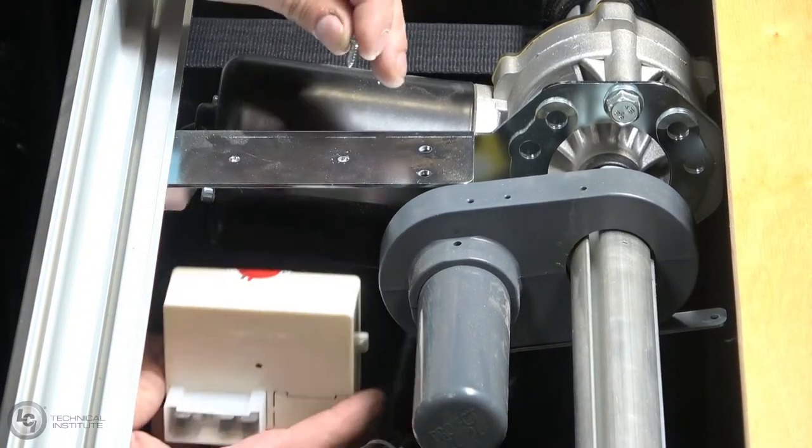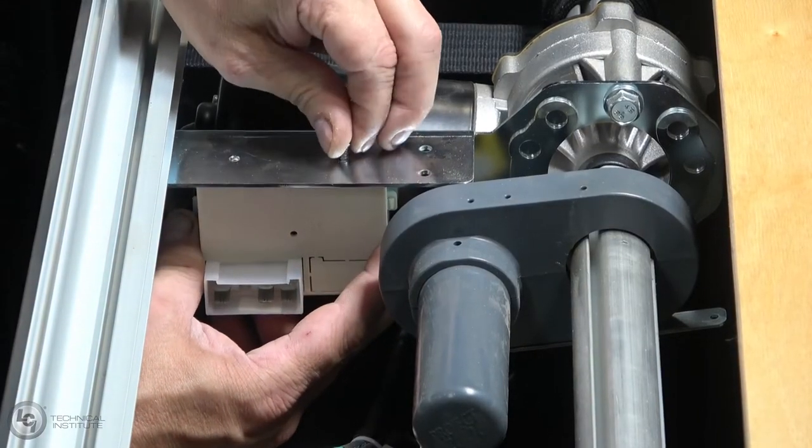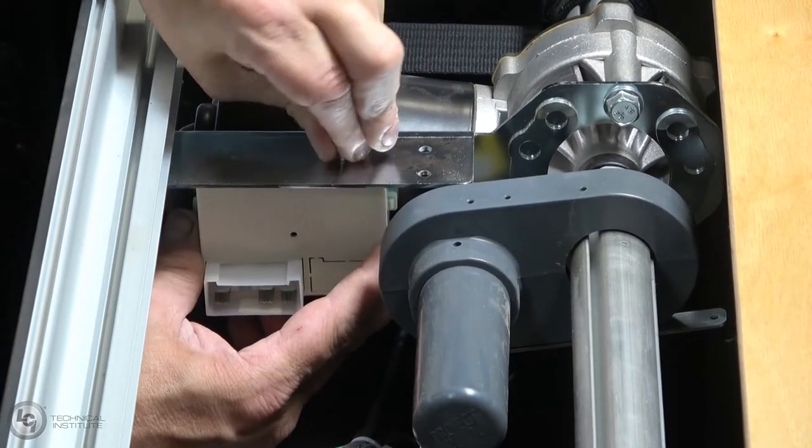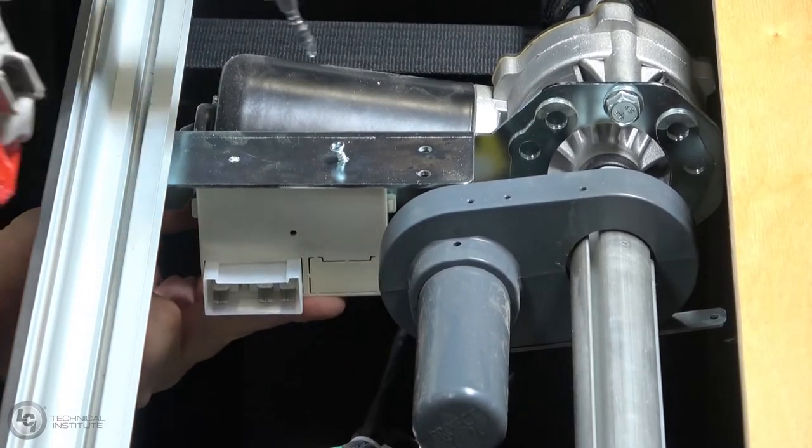For an easier installation of the new controller, position the new controller with one hand, align the new screw holes with the mount arm. Then, secure your first screw to support the controller and place and secure the second screw.